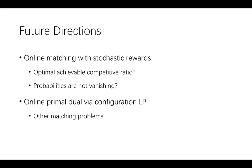I also list some possible future directions. For online matching with stochastic rewards, even for equal probabilities, the optimal achievable competitive ratio is unknown. There is also little work dealing with the case where probabilities are not vanishing. For the online primal-dual framework, there may be other matching problems that can benefit from analysis using configuration LP. That's all for my presentation. Thank you.